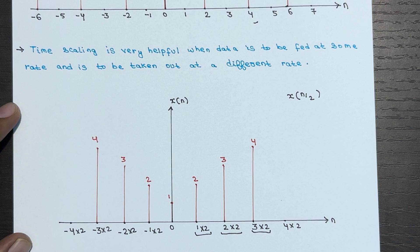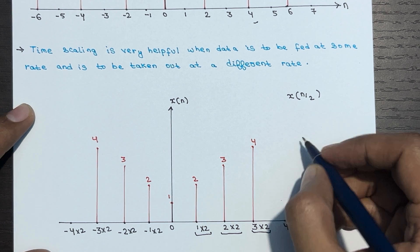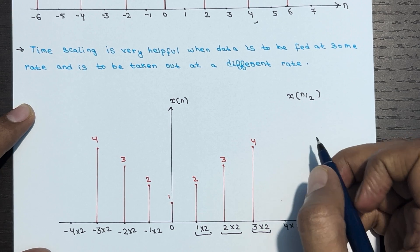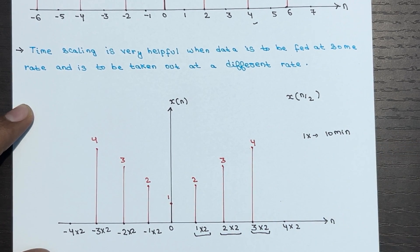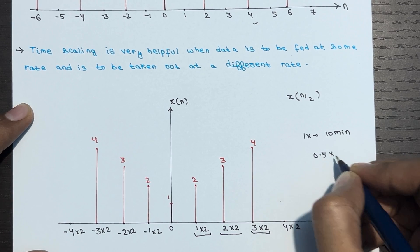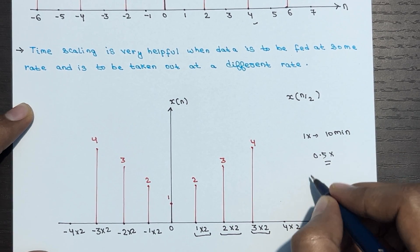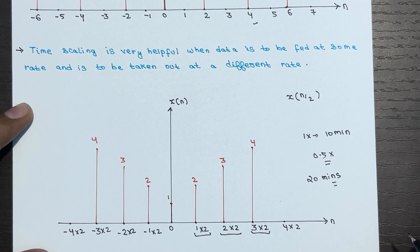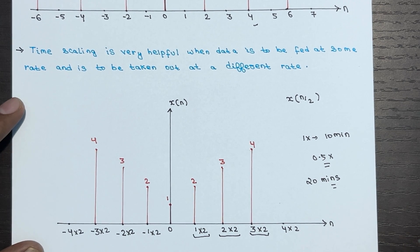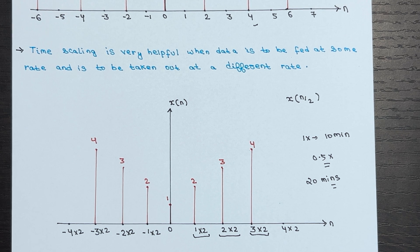An example of time expansion: a video of 10 minutes played at 1x speed takes 10 minutes to finish. When played at 0.5x speed, it will take 20 minutes to complete — this is like time expansion. That's all about time scaling of a discrete time signal. Please subscribe to our YouTube channel and reach out in the comment section if you have any doubts.